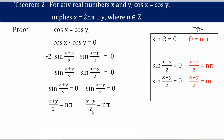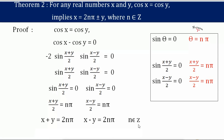Now let's multiply both sides by 2. So what we get is x plus y equals 2nπ, and x minus y equals 2nπ, where n belongs to integers.